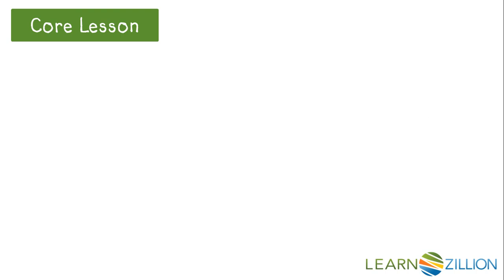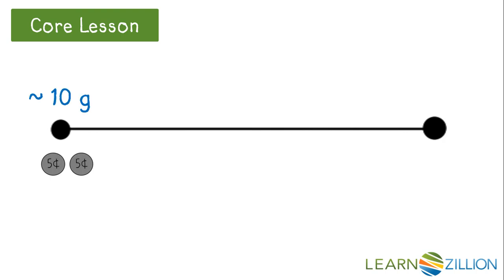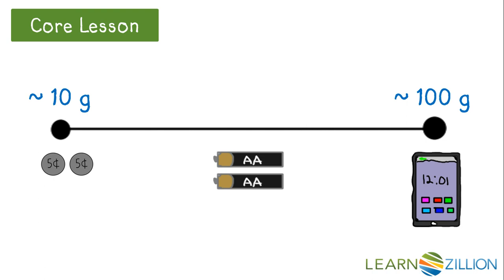Let's do another one. Two nickels have a mass of about 10 grams, and a smartphone has a mass of about 100 grams. Using that, what do you think is the mass of 2 AA batteries? The mass is about 50 grams.